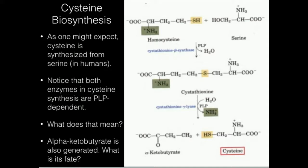One of the things that's very important to notice about both of these enzymes that convert serine to cysteine is that they're both pyridoxal phosphate or PLP-dependent enzymes. Pyridoxal phosphate is derived from pyridoxine, which is vitamin B6 — one of the B vitamins. Vitamin B6 is a molecule we cannot make ourselves; it is an essential nutrient that we have to get through the diet.